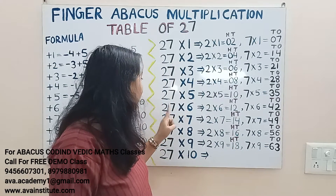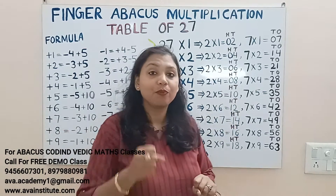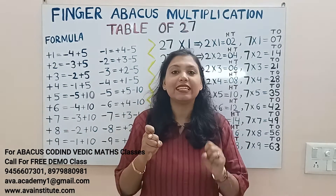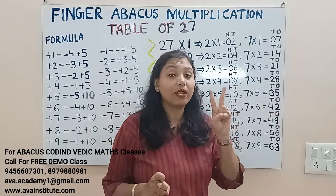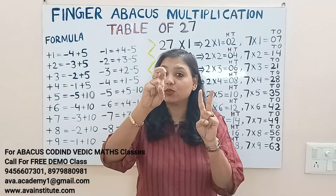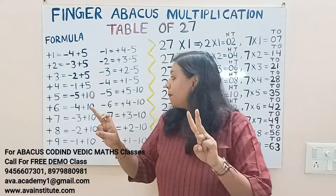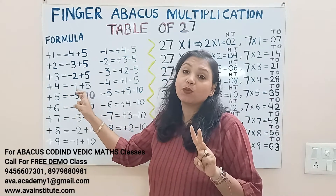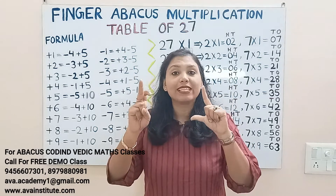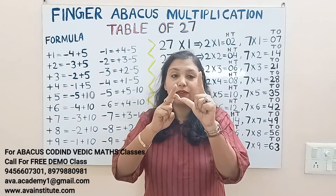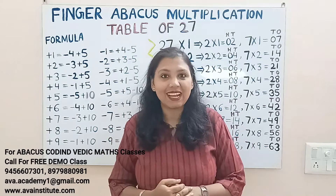27 sixes: 2 sixes are 12 — in hundreds 1, in tens 2. 7 sixes are 42 — in tens 40, in ones 2. To add 40: plus 4 formula is minus 1 plus 5, so plus 40 formula is minus 10 plus 50. The answer is 100, 50, 60, plus 1, 2 — 162 is the answer.